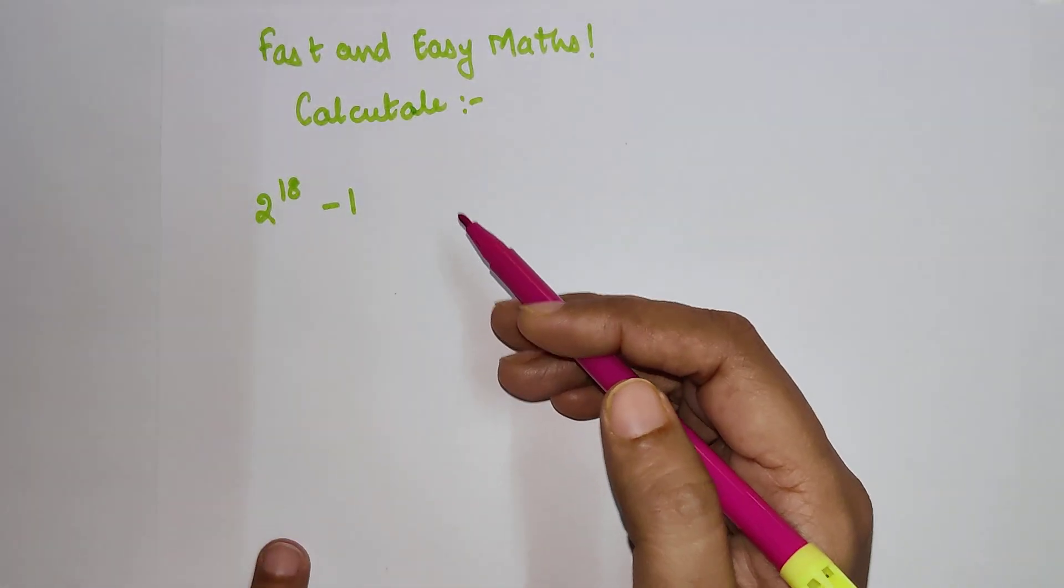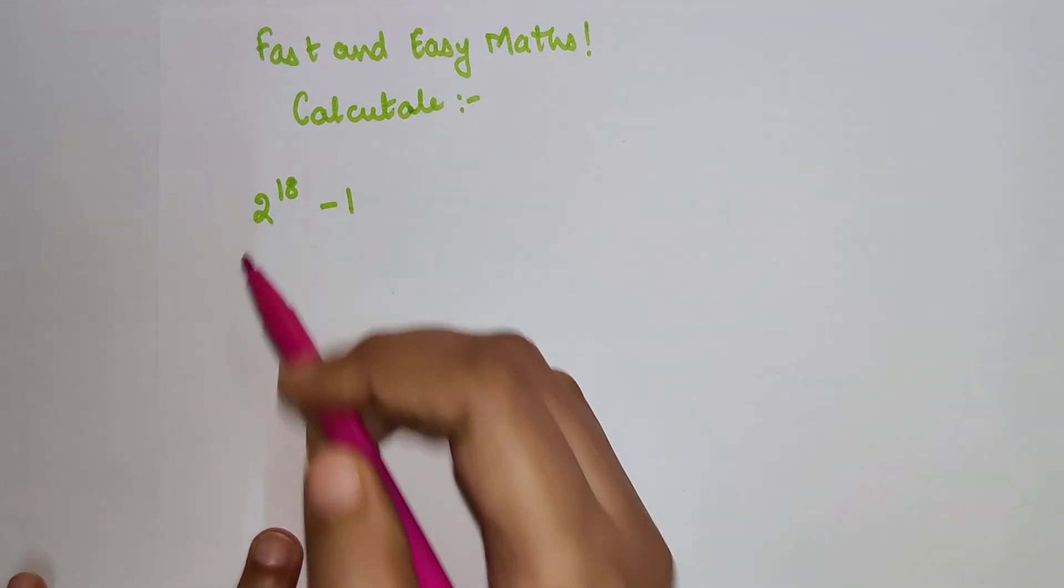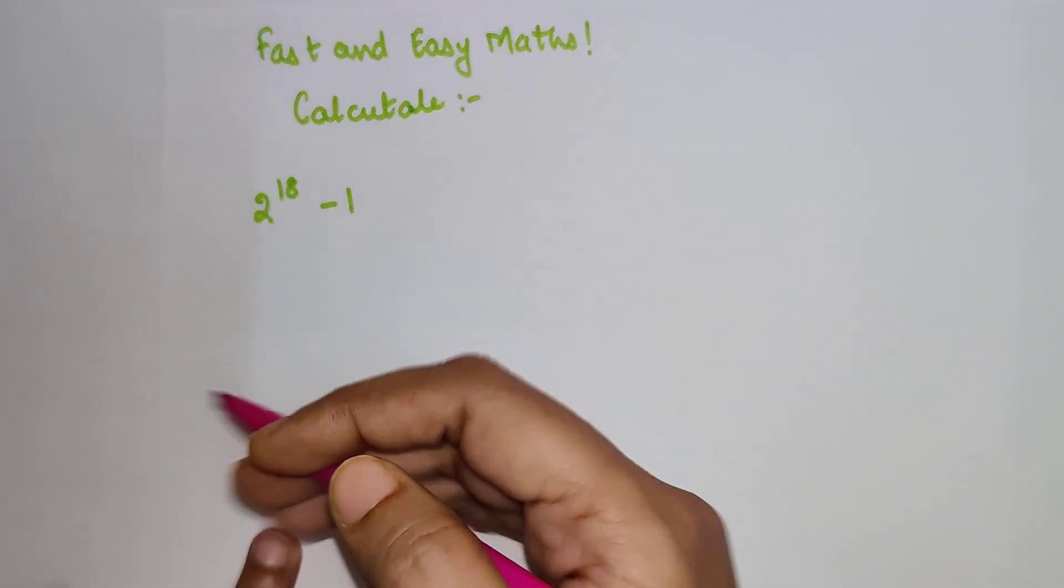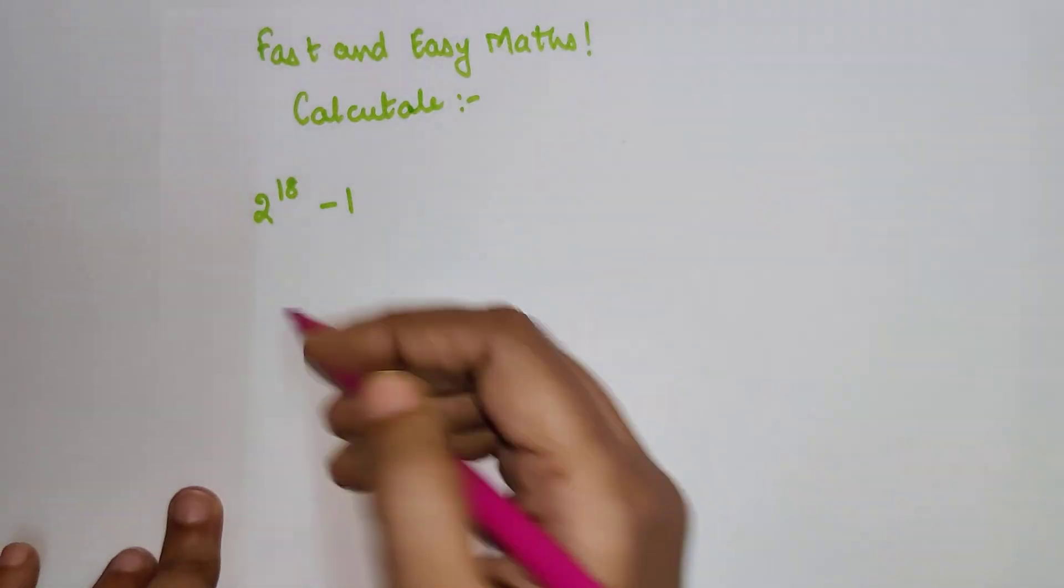So students, today we are going to calculate 2^18 - 1. Now understand this: 2^18 itself is a big number, so what we should do is try to split it.